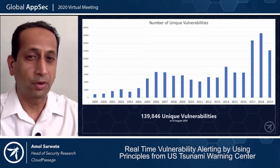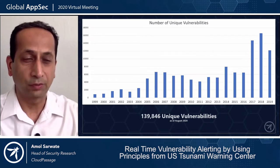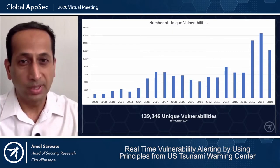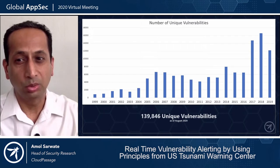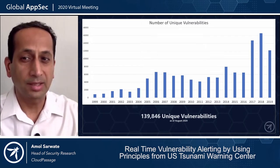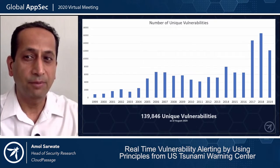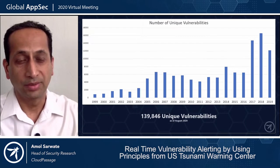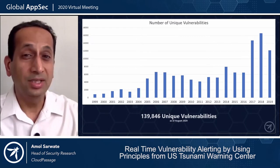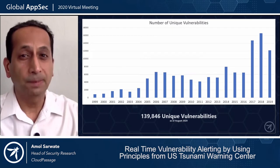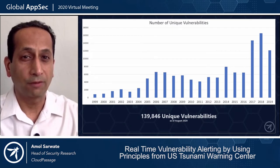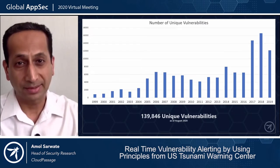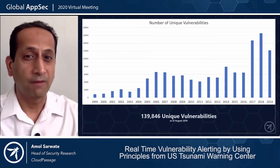This chart shows the number of unique vulnerabilities going back two decades, from when NVD started documenting vulnerabilities to last year. In the last three years, on an average, there have been about 15,000 unique vulnerabilities listed. Now, these are unique vulnerabilities — multiply them by the number of viruses, worms, scripts, and exploit packs, and you get a large amount of attacks based on those unique vulnerabilities.